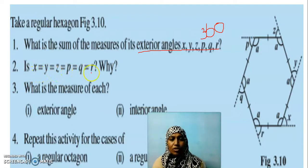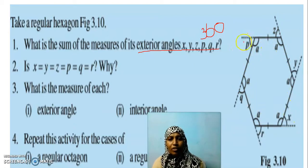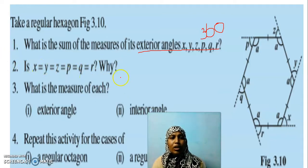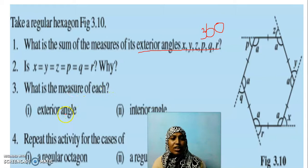Is x equal to y equal to z equal to p, q, r? Will all these exterior angles be equal? Yes, surely they will be equal because it is a regular hexagon — all sides are equal, all angles are equal. If the interior angle is a everywhere, then the exterior angle will be 180 minus a here, q will also be 180 minus a, r will also be 180 minus a, x will also be 180 minus a — everywhere it will be the same. And what is the measure of each exterior angle?